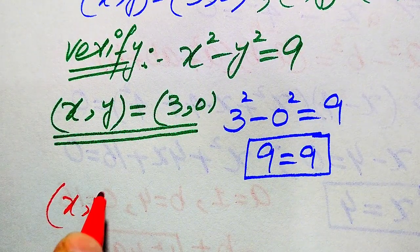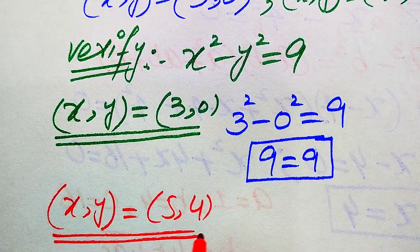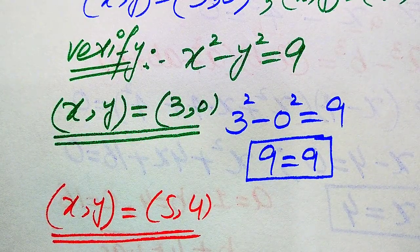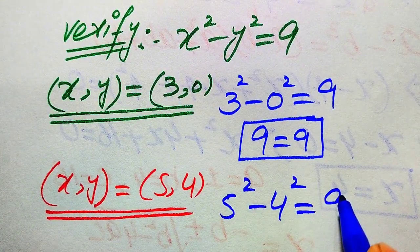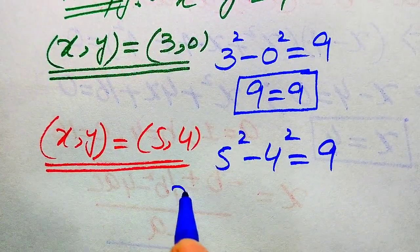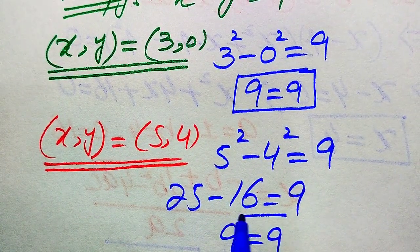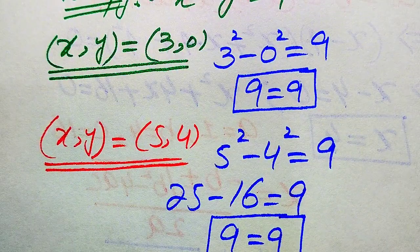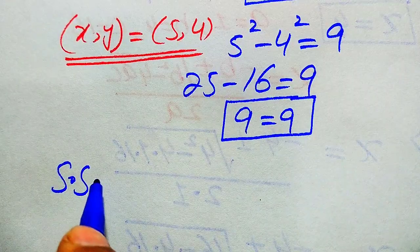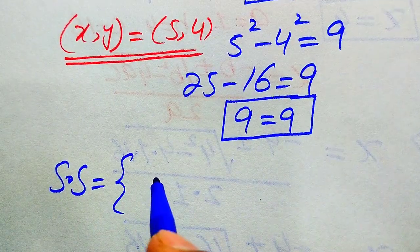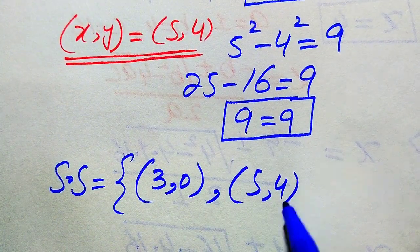Verifying the second solution (x, y) equals (5, 4): substituting gives 5 squared minus 4 squared equals 9, which is 25 minus 16 equals 9, confirming 9 equals 9. Both solutions satisfy the original equation, so the final solution set is (3, 0) and (5, 4).